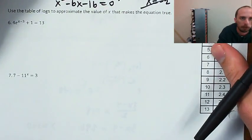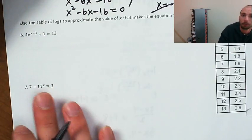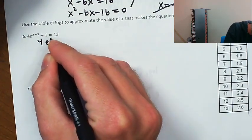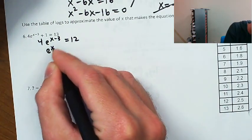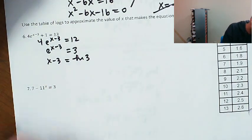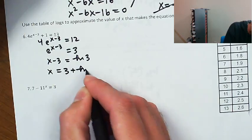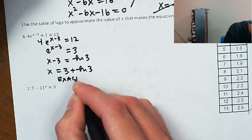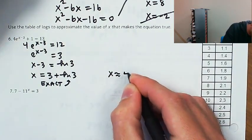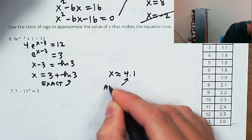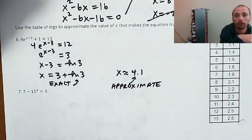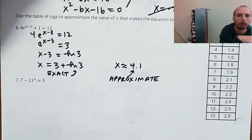Now we're going to use this table of logs to approximate the value of x. I'll solve for an exact solution and show how to approximate it. Starting with isolating the exponential — subtracting 1, dividing by 4 — taking the natural log of both sides gives x minus 3 equals natural log of 3. Then x equals 3 plus the natural log of 3. That's exact. An approximation would be 3 plus 1.1, which is 4.1, since I looked up that value from the table.